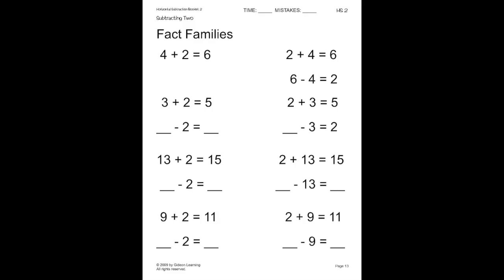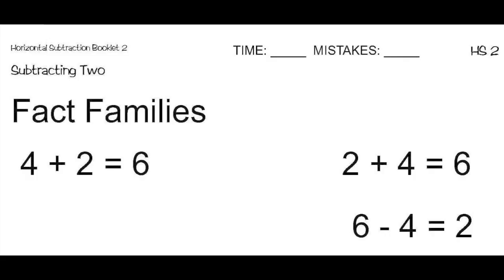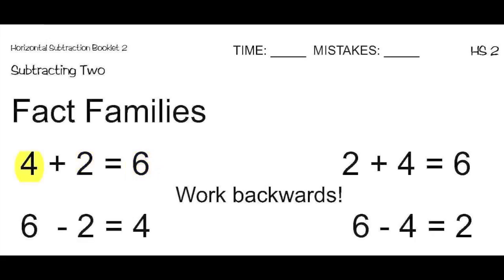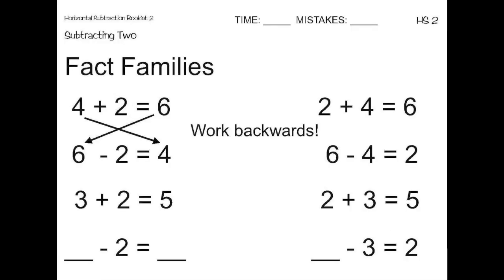Now, we'll work on fact families on this page. Here, we have the addition problem 4 plus 2 equals 6. We'll use these same numbers to create a subtraction problem. One approach is to work backwards from the addition problem. So, we'll have 6 minus 2 equals 4. You can see the same pattern on the next couple of problems: 2 plus 4 equals 6, and 6 minus 4 equals 2. Notice how the subtraction problem is the opposite of the addition problem. Here, we have 3 plus 2 equals 5, and once again we use this problem to fill in the blanks on the subtraction problem beneath it by working backwards. So, we'll have 5 minus 2 equals 3.